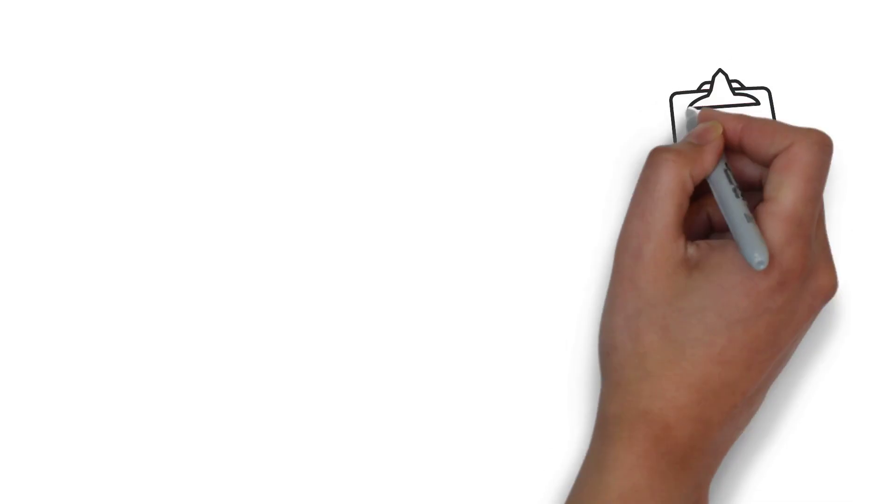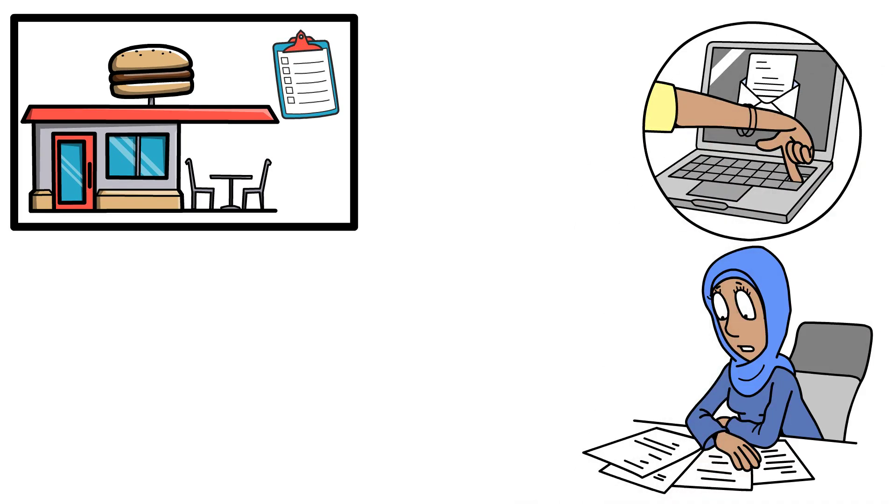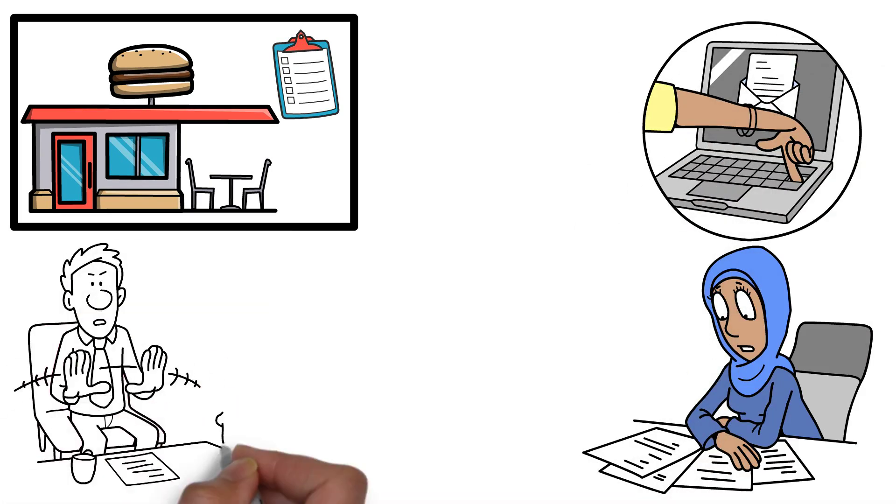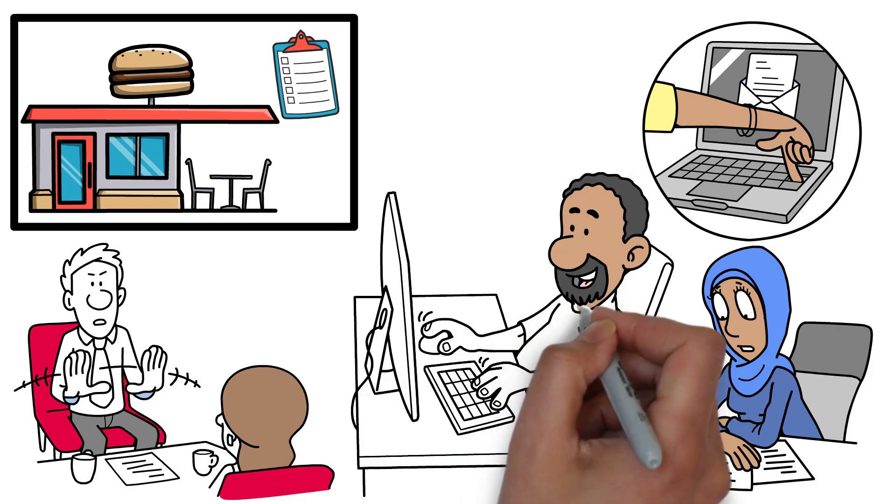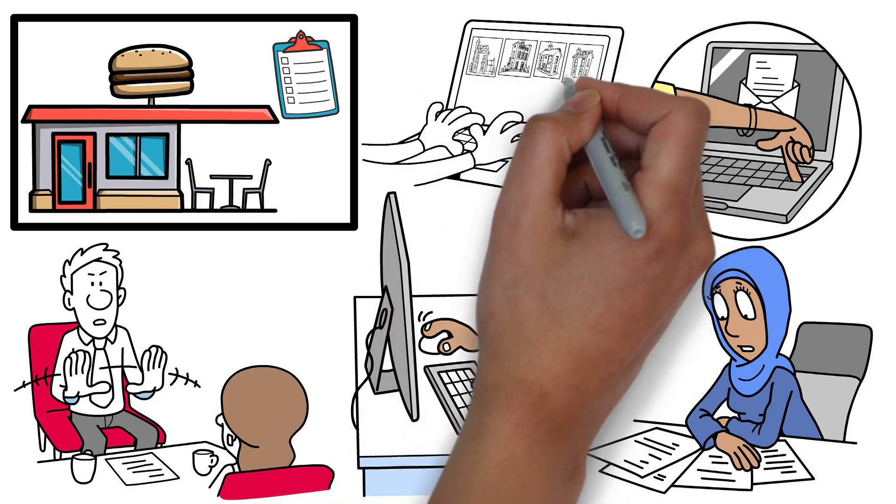Another example could be a study on customer satisfaction at a fast food chain. The researcher might send out a survey to hundreds of customers asking them to rate their experience on a scale from 1 to 10. By analysing these numbers, the researcher could determine the overall satisfaction level and identify which areas need improvement.